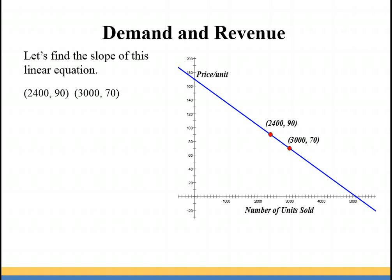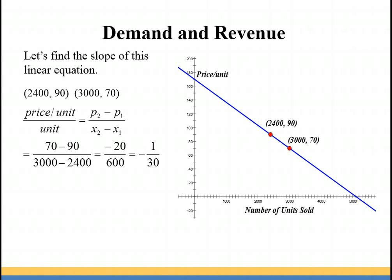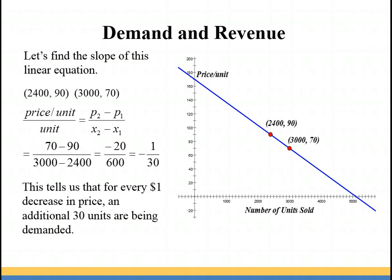So let's find the slope for this linear equation. Using our two ordered pairs, we're going to use our slope formula. Normally your slope formula is y₂ minus y₁ over x₂ minus x₁, but in this case we're using p to represent the output value. So finding our slope, we're going to find the difference between our p values, 70 minus 90, and the difference between our x values, 3000 minus 2400. So we have negative 20 over 600, or in lowest terms negative 1/30. So what that tells us is that for every dollar decrease in price, an additional 30 units are being demanded.